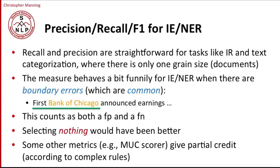The problem is that recall and precision are straightforward for tasks like web search, information retrieval, or text categorization, where there's only one grain size — you're putting a classification on a document. But in this case, what we're doing is putting classifications on sub-sequences of words, and the precision, recall, and F measures actually behave a bit funnily when that happens.